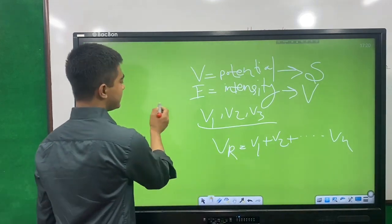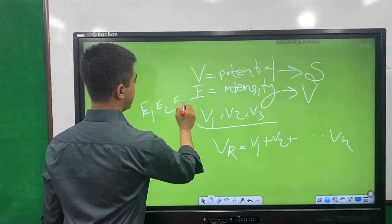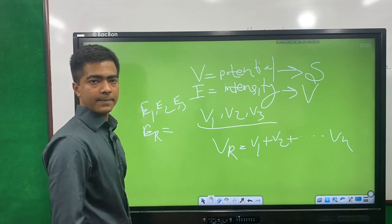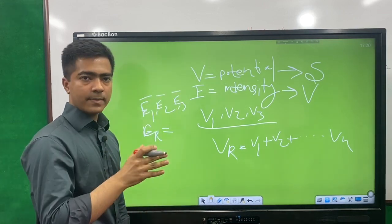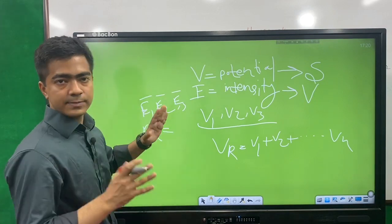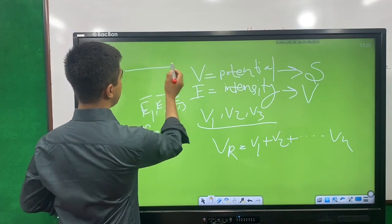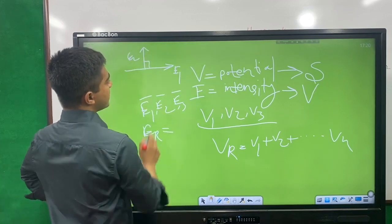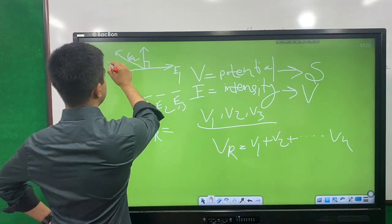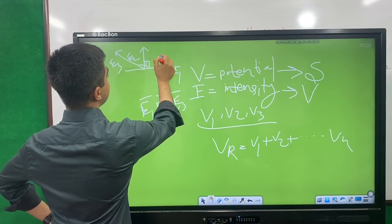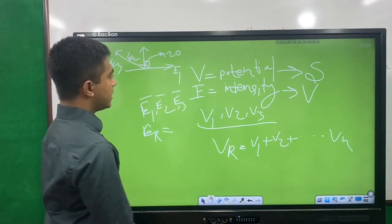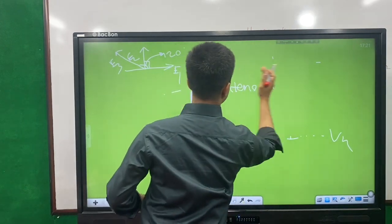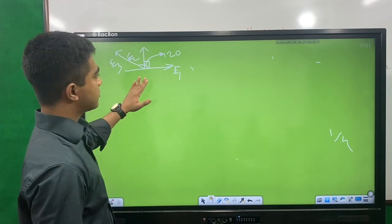For electric intensity E1, E2, E3, we have to add them considering their directions. The resultant intensity of E1, E2, E3 requires vector analysis. We have to consider the direction and calculate using vector equations, including the full angle between them.